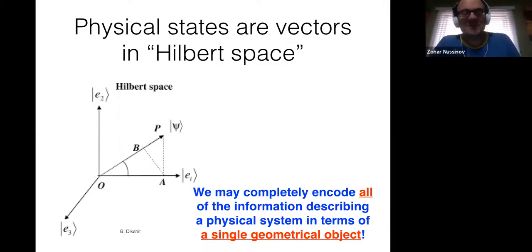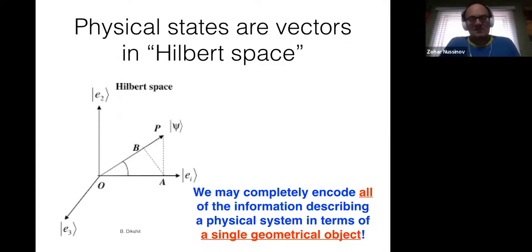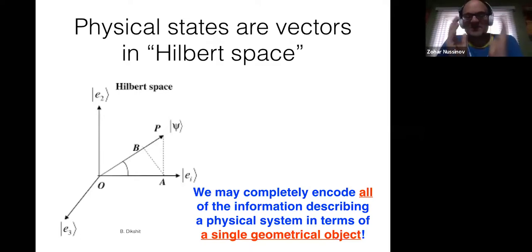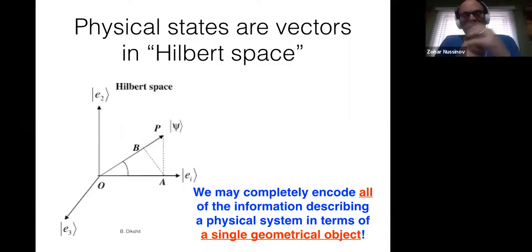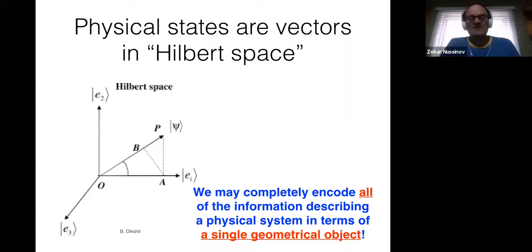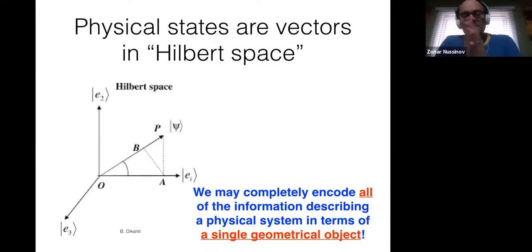Importantly, you can describe completely the state of a system — any system, including the universe — in terms of a collection of numbers. That collection of numbers will have components along different axes like x, y, z, that you're accustomed to. So basically, we describe nature in terms of collections of numbers, and these numbers define a direction in space with some length and some angles.